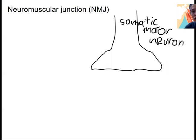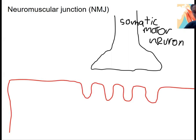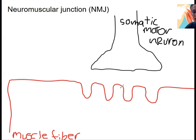The cell body of this neuron is in the spinal cord, and it projects out into the periphery to a muscle cell, also called a muscle fiber. There are folds along the sarcolemma of the muscle fiber that increase surface area when neurotransmitter is released from the motor neuron — these folds provide more sites for neurotransmitter to connect to.